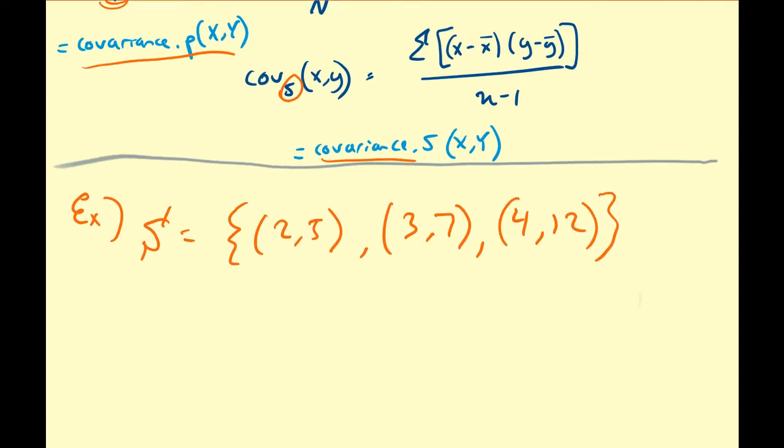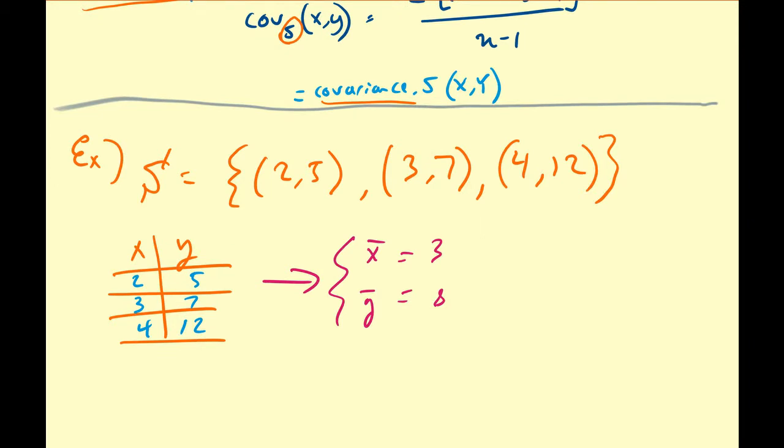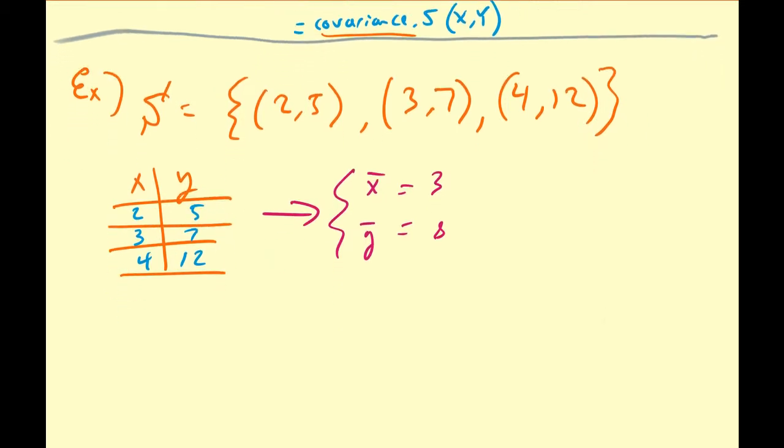So once you have your data values, you can collect them in two columns, X and Y. Sometimes it's easy to view it like this. So our X values are 2, 3, and 4, with Y values 5, 7, and 12. So from this, you can get the means X bar and Y bar to be equal to 3 and 8 respectively. So X bar is going to be 2 plus 3 plus 4 divided by 3, and Y bar is 5 plus 7 plus 12 divided by 3.